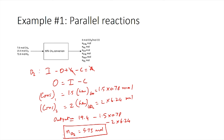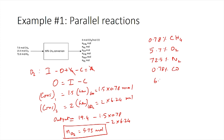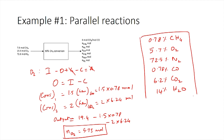We now have the moles of all components in the product stream. Summing all moles gives the total, and dividing gives molar percentages: 0.78% methane, 5.7% oxygen, 72.5% nitrogen, 0.78% CO, 6.2% CO₂, and 14% water vapor. This completes the molecular species balance approach.